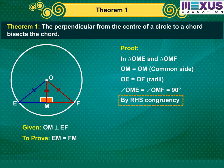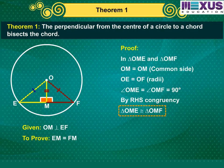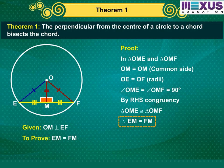Thus, by RHS congruency we can say that triangle OME is congruent to triangle OMF. Therefore, EM is equal to FM, thus OM bisects EF. Hence proved.